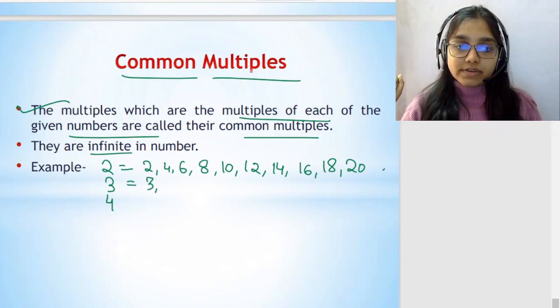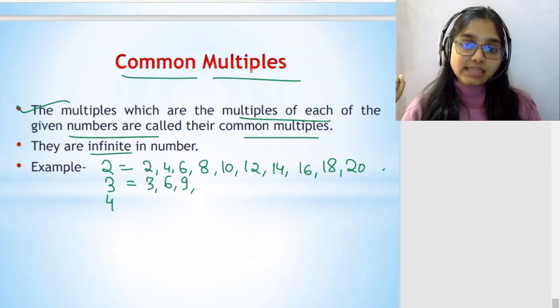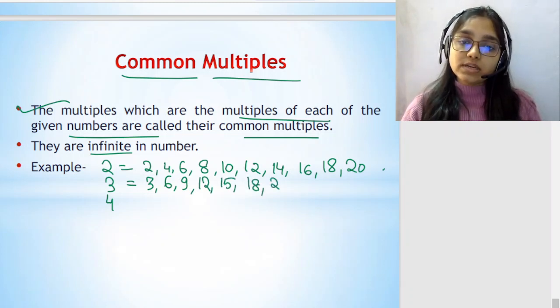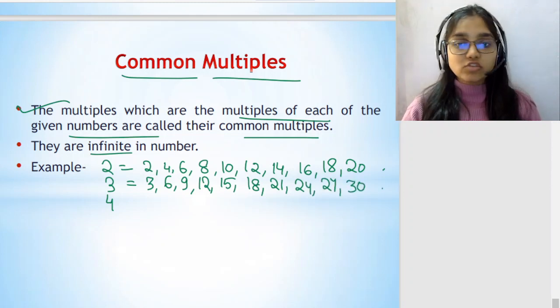Now 3 into 1 is 3, 3 into 2 is 6, 3 into 3 is 9, 3 into 4 is 12, 3 into 5 is 15, 3 into 6 is 18, 3 into 7 is 21, 3 into 8 is 24, 3 into 9 is 27, 3 into 10 is 30. So we will stop over here.